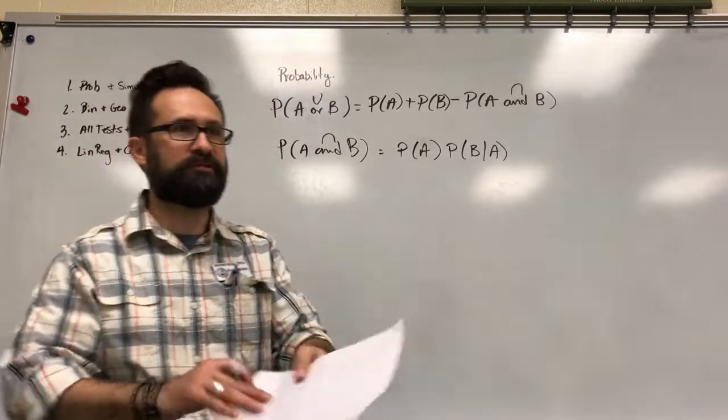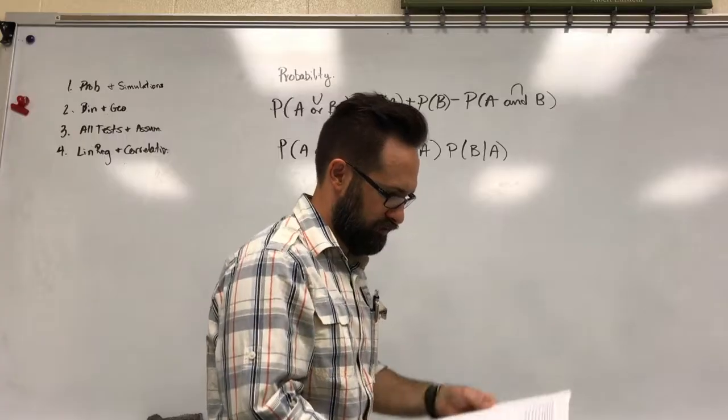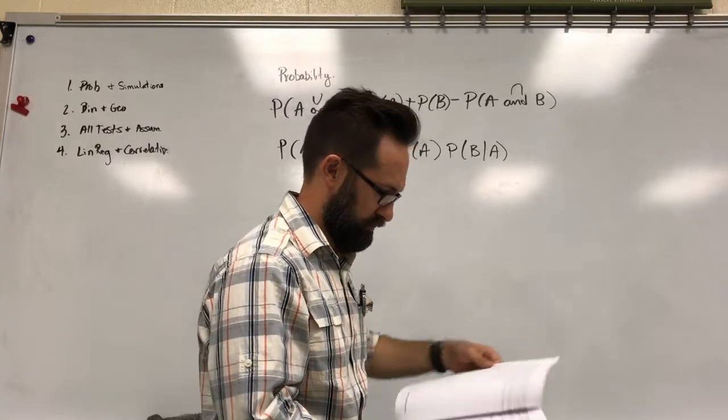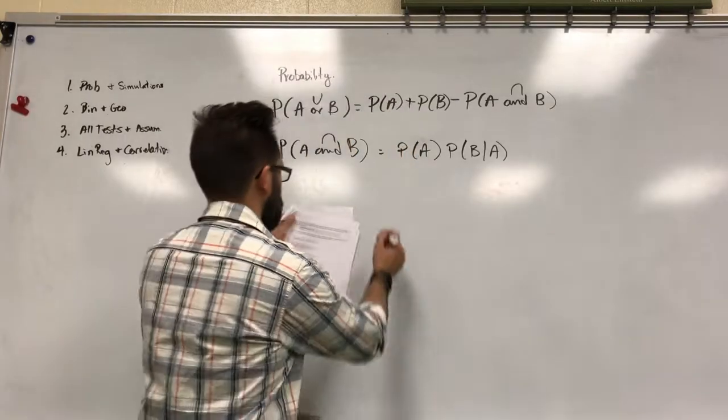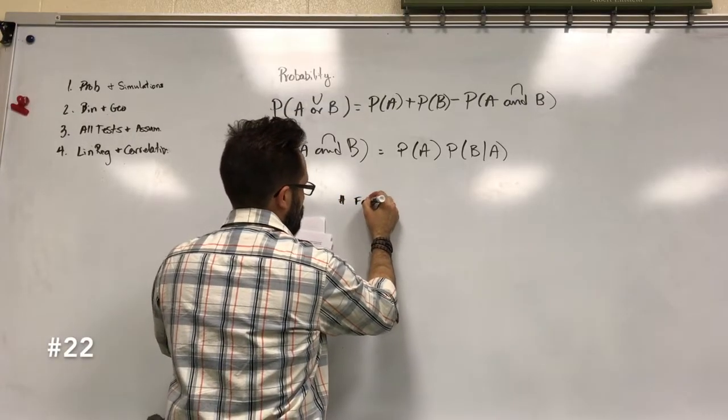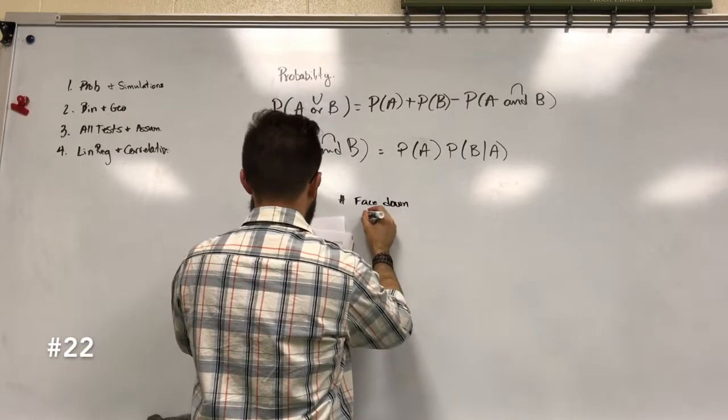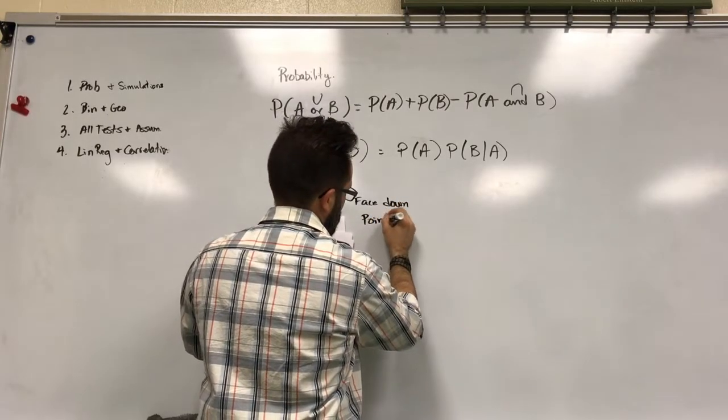Which problem do you want to look at? 22. Okay. All right. So we have a table. So this is number faced down, and we have points.